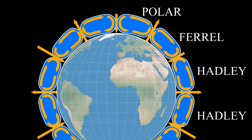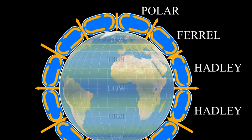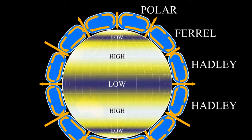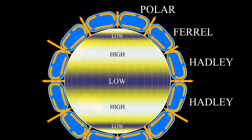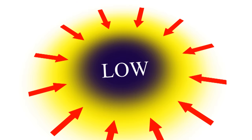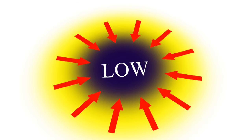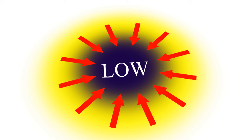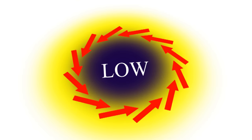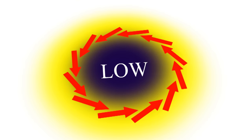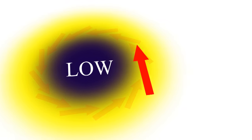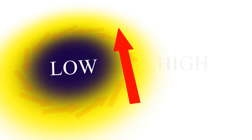Now we know where air is rising and falling, which tells us where there's high and low pressure — and pressure differences cause wind. Imagine we have an area of low pressure. Wind moves from high pressure to low pressure, so at first you might expect the wind to rush in from all sides. But remember the Coriolis force — it deflects the wind to the right in the Northern Hemisphere. So wherever you see wind, you'll see low pressure to the left of the wind and high pressure to the right.